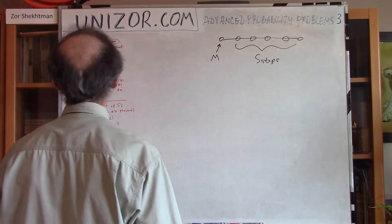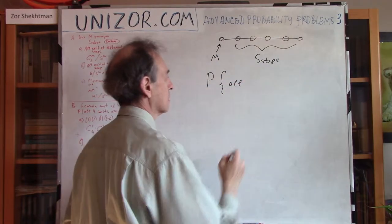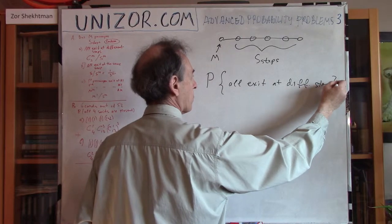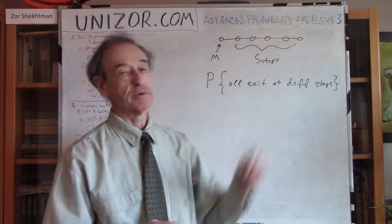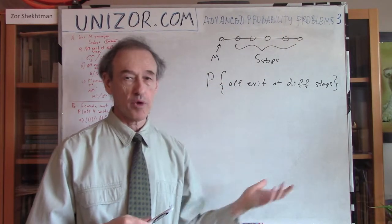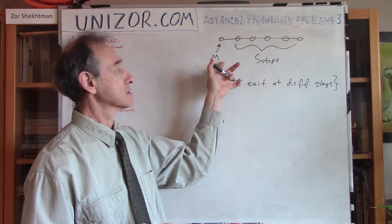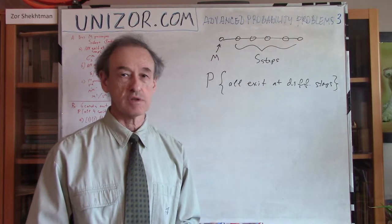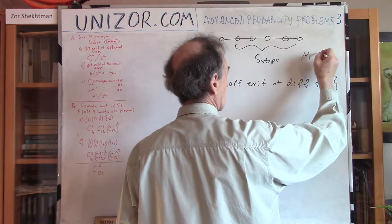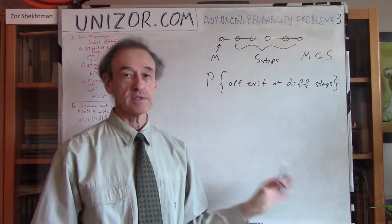Now let's go to the problem. What's the probability that all passengers exit at different stops? So no two passengers are exiting on the same stop. Obviously, I should assume that the number of stops S is greater than or equal to the number of passengers M, because if M is greater than S, there is always a stop where two or more passengers must exit. But if M is less than or equal to S, they can all exit at different stops without any problems.